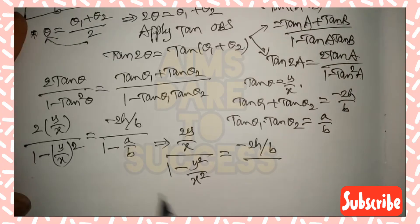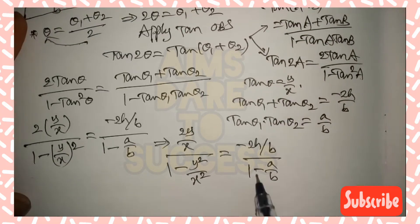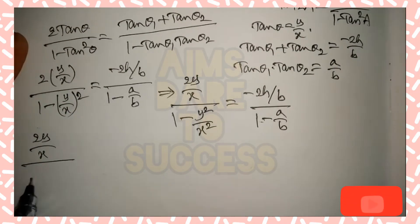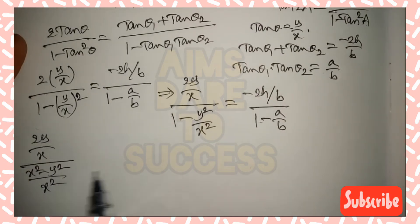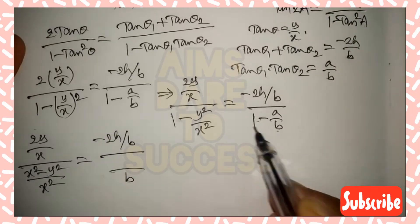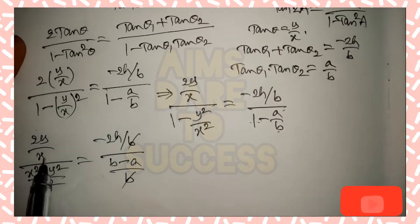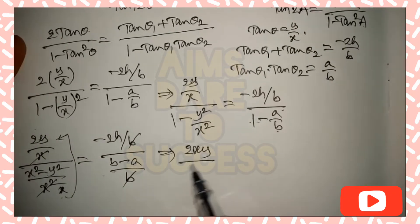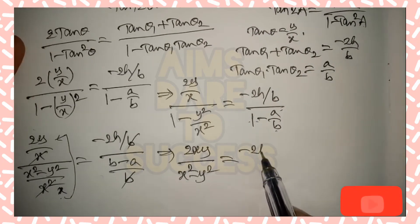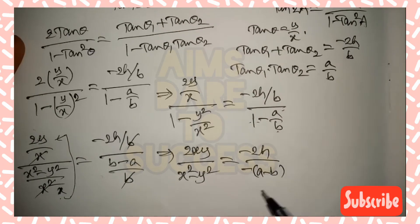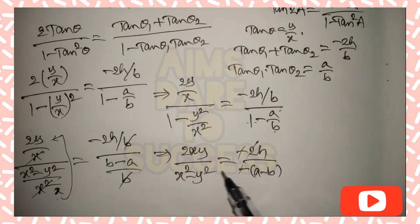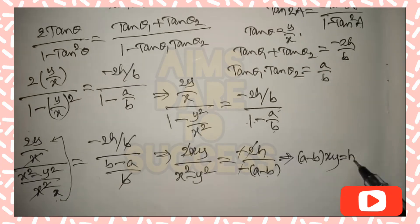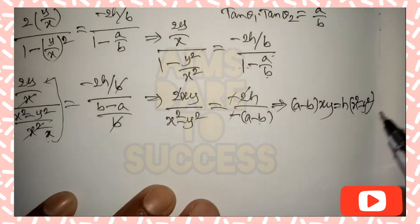On the left side, taking x² as the LCM in the denominator: (2y/x) / ((x² − y²)/x²) = 2xy / (x² − y²). On the right side, taking b as LCM: (−2h/b) / ((b − a)/b) = −2h / (b − a). So 2xy / (x² − y²) = −2h / (b − a). Taking minus common from (b − a) gives (a − b), and the 2s cancel from both sides. Cross-multiplying: h(x² − y²) = (a − b)xy.